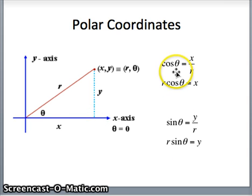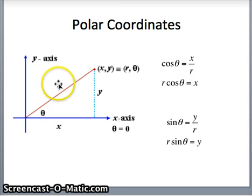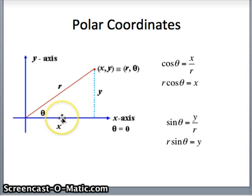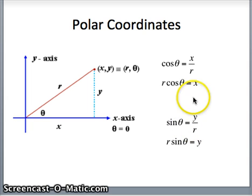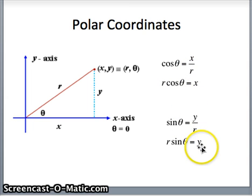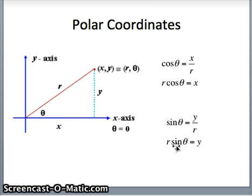Looking at this, what do we recognize? Cosine of theta is adjacent over hypotenuse, so cosine of theta is x divided by r. Sine of theta is opposite divided by hypotenuse, so sine of theta is y divided by r. Solving for x, we get x is r cos theta. Solving for y, we get y is r sine theta. So that enables us to solve for both x and y.